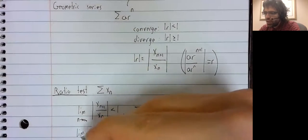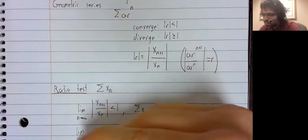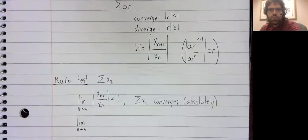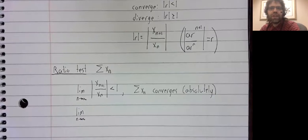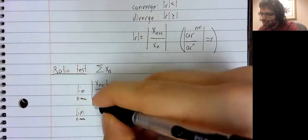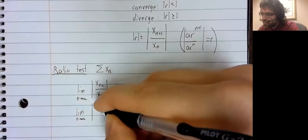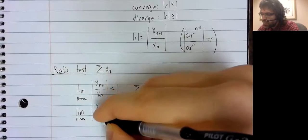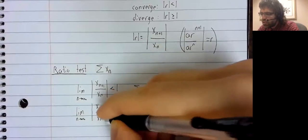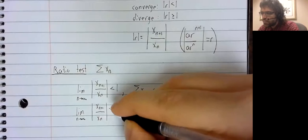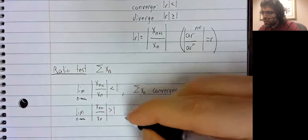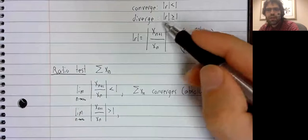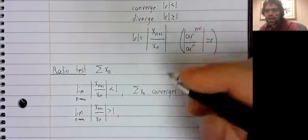If the limit as N goes to infinity of this ratio is greater than one, then just as we might expect from this,